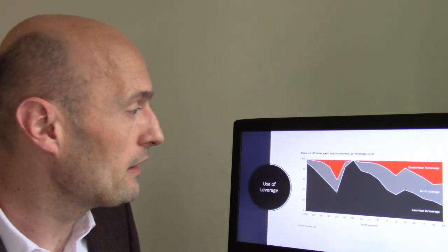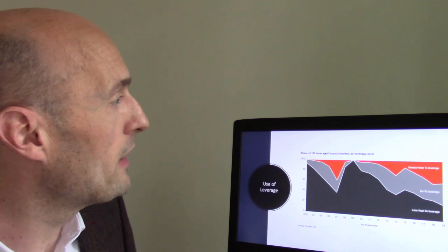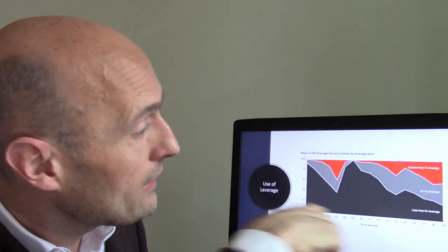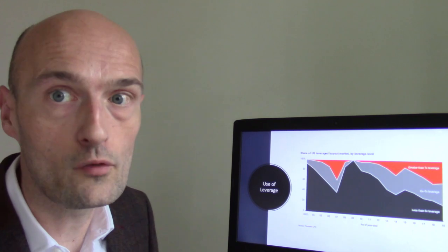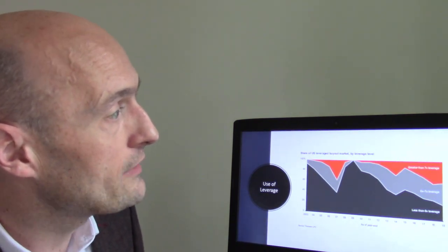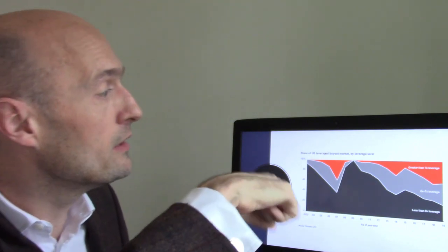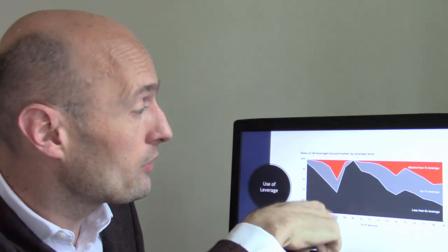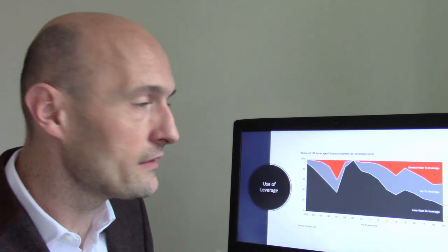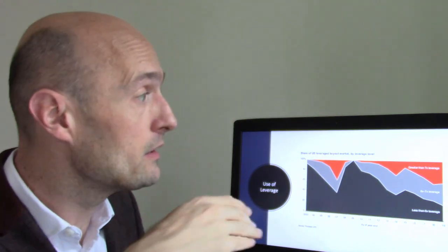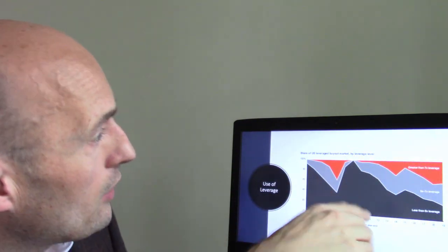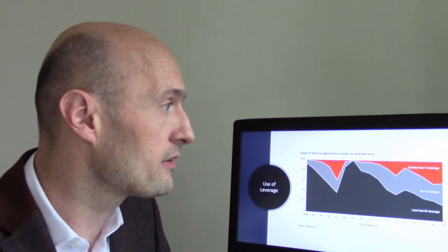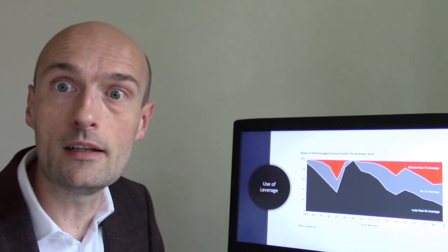A Thomson chart shows the share of the US leveraged buyout market by leverage levels over time. The darkest color represents less than 6x leverage, grey is 6-7x, and red is greater than 7x. Leverage levels grew dramatically in the run-up to the credit crunch, then dampened by 2009. In recent years it has ramped back up to levels almost as high as 2007 right before the credit crunch.